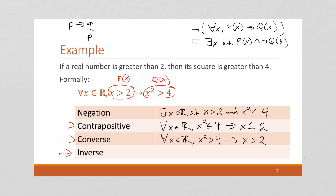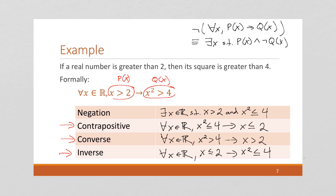The inverse is not P implies not Q: for all x in the real numbers, if x is less than or equal to 2, then x squared is less than or equal to 4. This is also false — if x is negative 5, negative 5 is less than or equal to 2 but negative 5 squared is 25, which is not less than or equal to 4. Parsing these out and building this table is very useful.